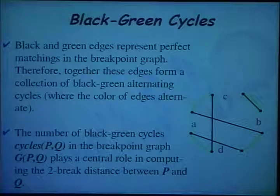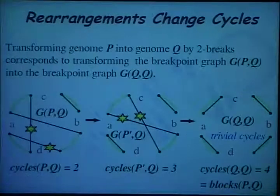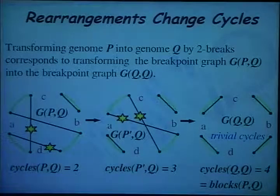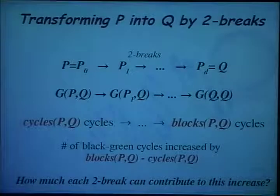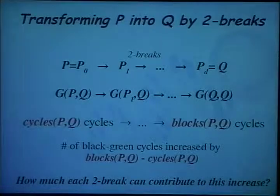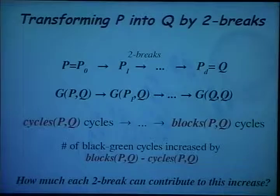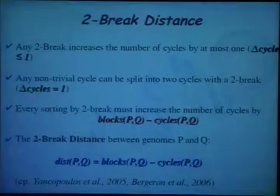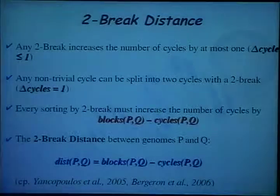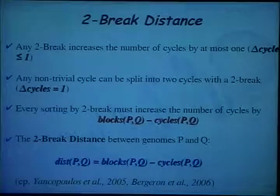It turns out that the number of cycles plays an important role in computing two-break distance between two genomes. In an optimal transformation of one genome to the other, the number of cycles increases at each step until it equals the number of genes in the genomes. Each two-break can contribute at most one to this increase, and as soon as we have a non-trivial cycle, we can break it into two, increasing the number of cycles by one. This leads to the simple formula: two-break distance equals the number of blocks minus the number of cycles in the breakpoint graph.